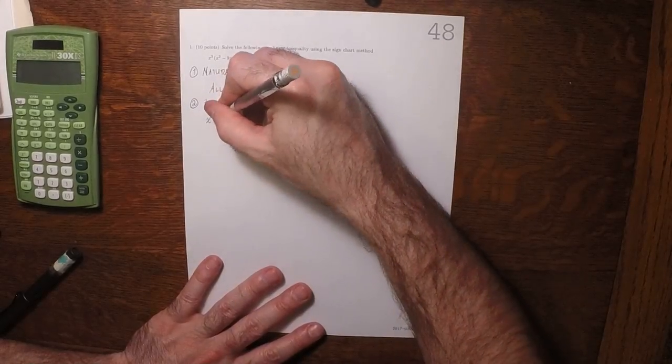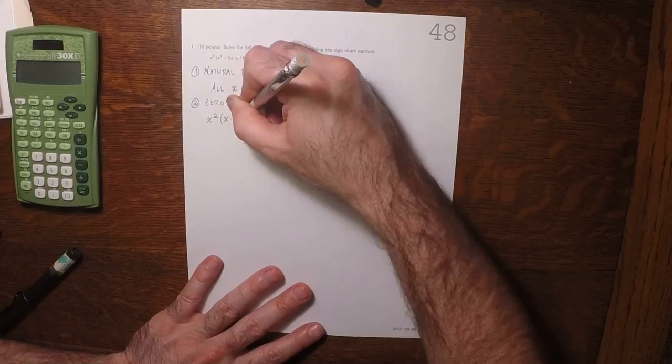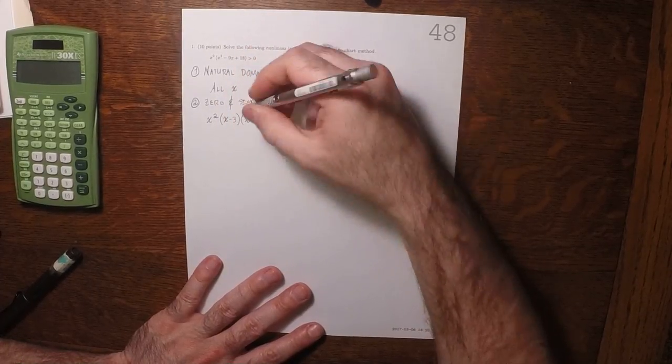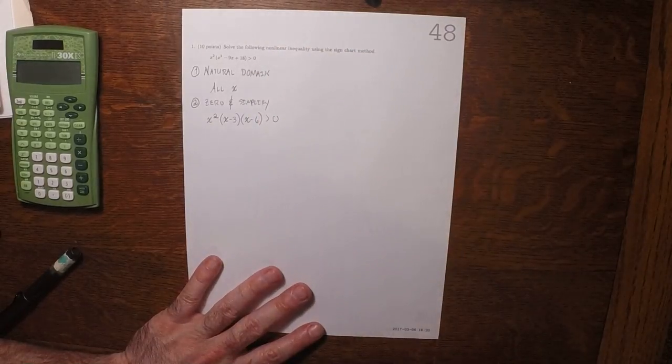Yeah, sure. How about x minus 3 times x minus 6 greater than 0? OK. Well, that's it.